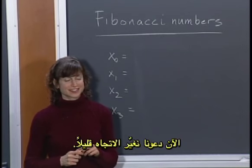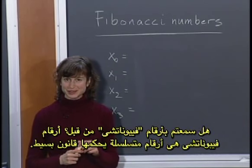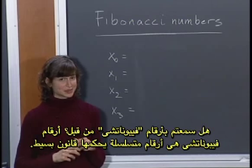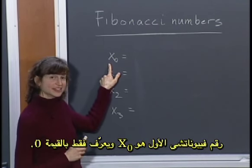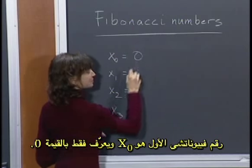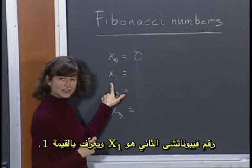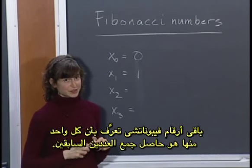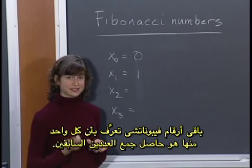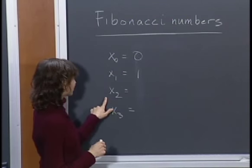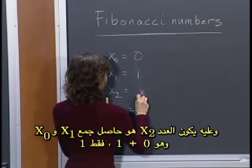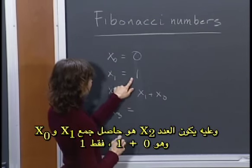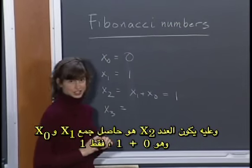Now let's change direction a little bit. Have you ever heard of the Fibonacci numbers? The Fibonacci numbers are a sequence of numbers defined by a simple rule. The first Fibonacci number, x0, is just defined to be 0. The second Fibonacci number, x1, is defined to be 1. The rest of the Fibonacci numbers are defined to be the sum of the previous two. So x2 will be the sum x1 plus x0, which is 1 plus 0, just 1.